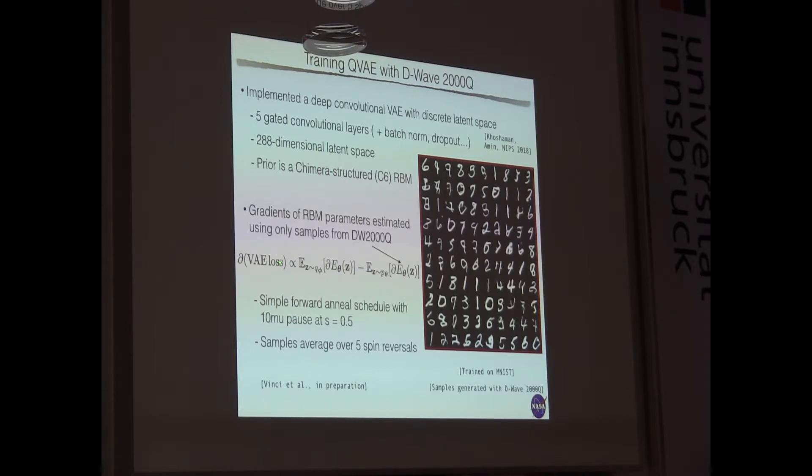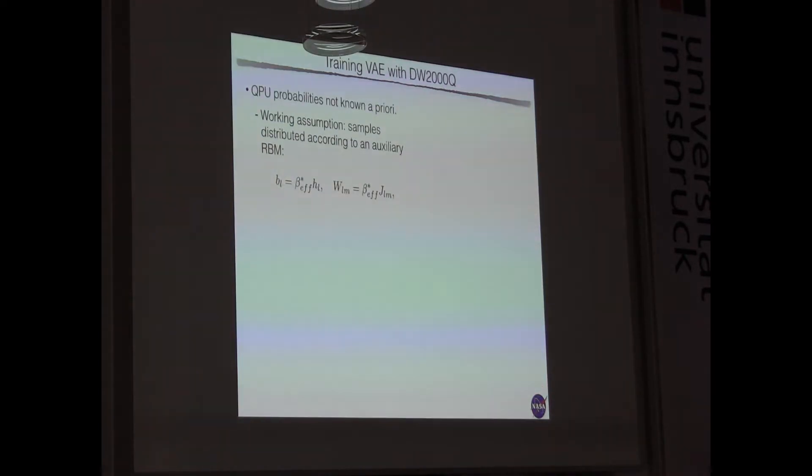There are 50,000 digits and they are 784-dimensional. Again, as I said, we train the model. There are some derivatives here, gradients, that requires the computation of expectation from the RBM. And we compute this expectation only sampling from a D-Wave 2000Q. We use a simple annealing technique, but we need to do some spin reversal. These are technical details, but we are able to achieve these results that are usable. Think of it as a practical implementation.